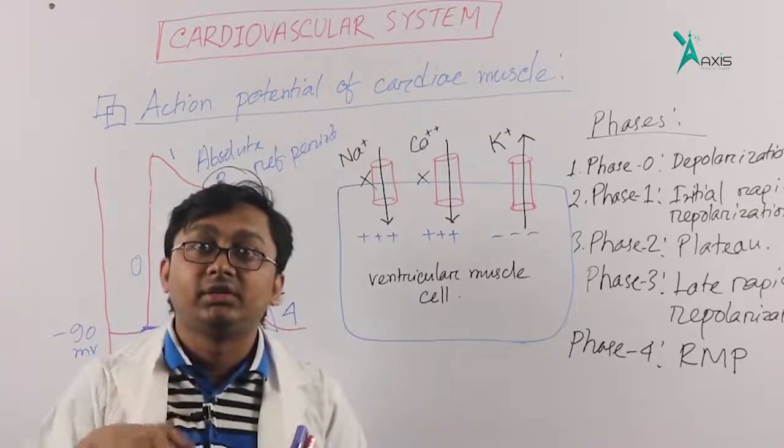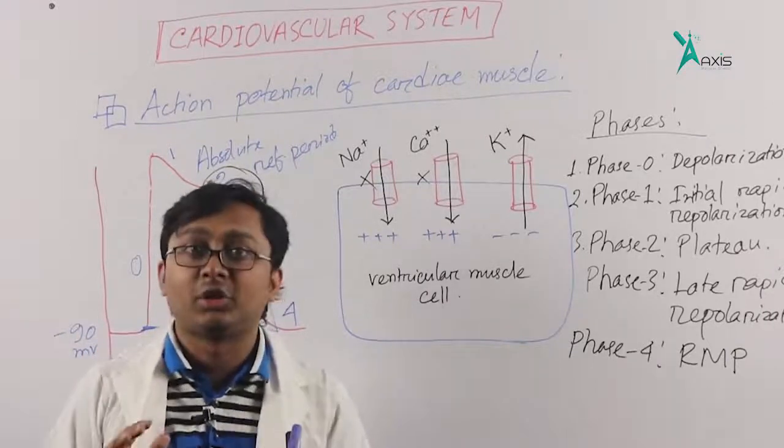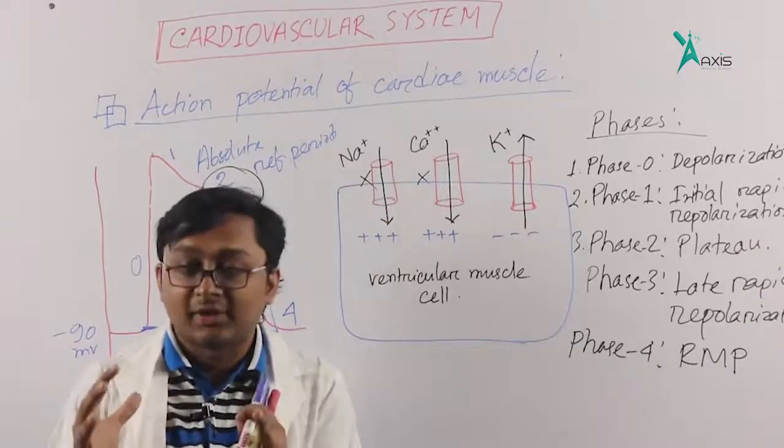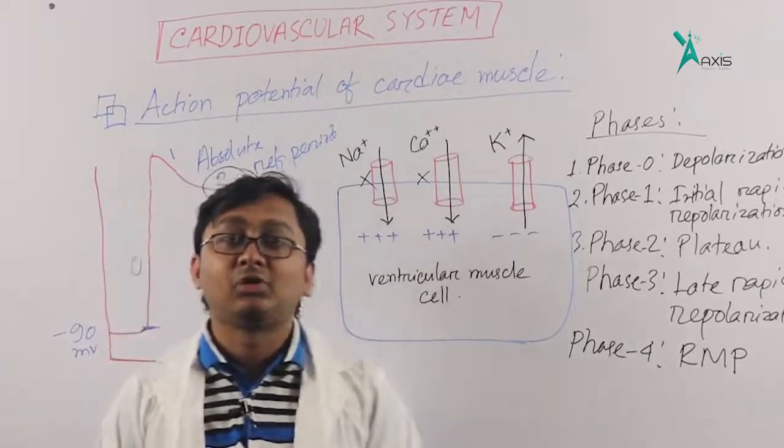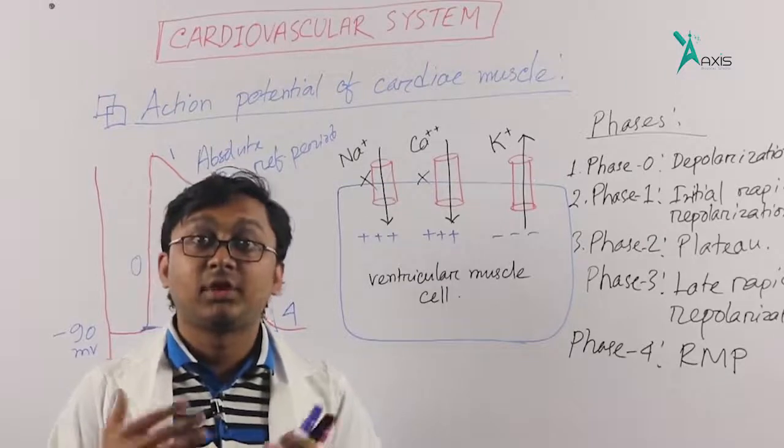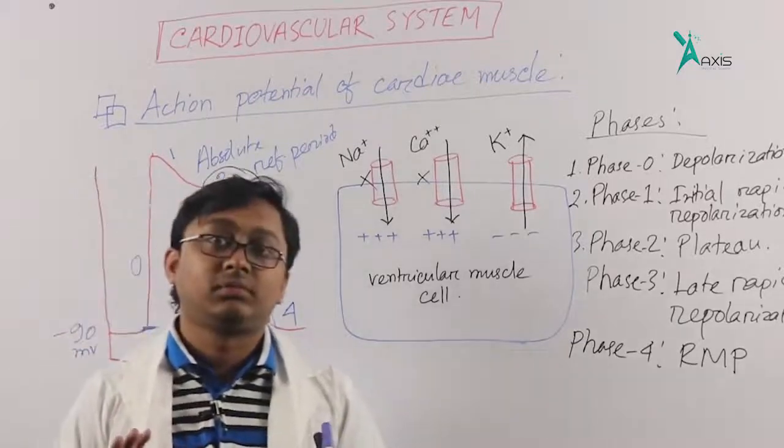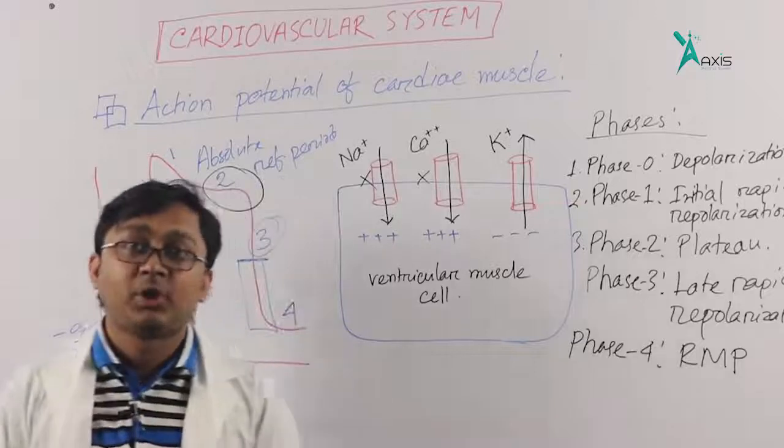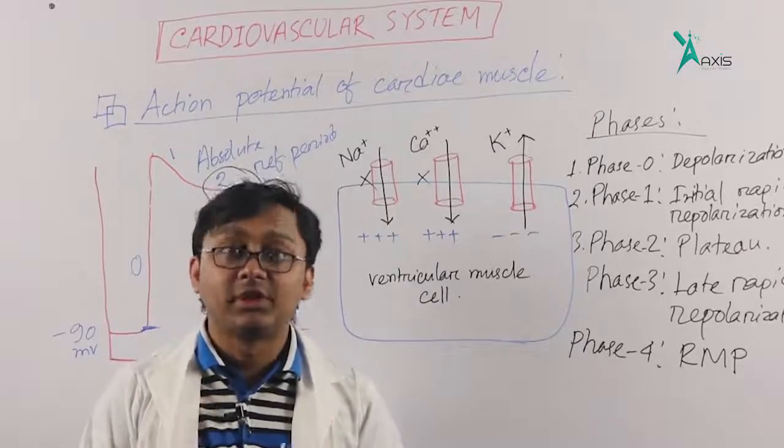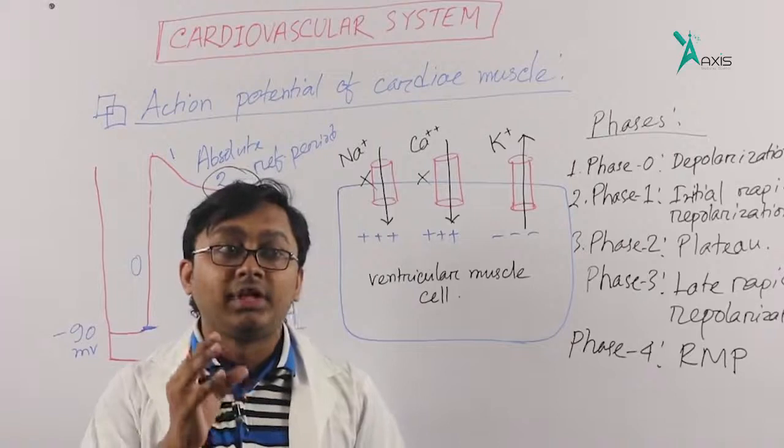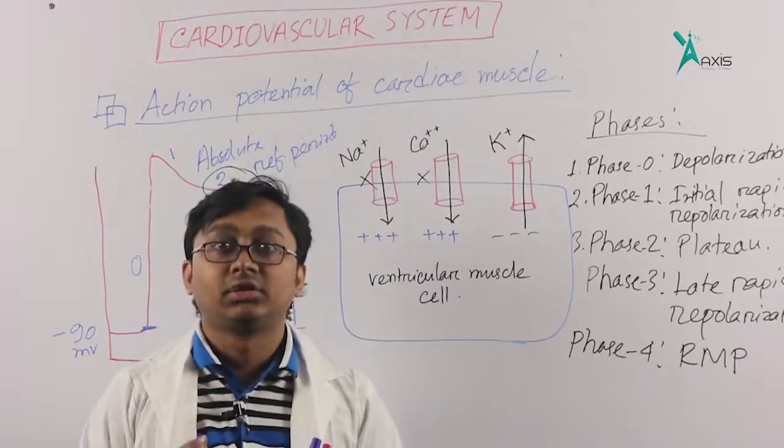If there was no refractory period, there would be continuous contractility causing tetanic, continuous spasms, titanic spasms. Due to this refractory period, heart muscle cannot be tetanized. This is an important point. The refractory period gives necessary time to get enough nutrition and oxygen, because heart muscle gets nutrition during diastole. During diastole of the ventricle, coronary perfusion occurs, giving enough time to get nutrition and oxygen.